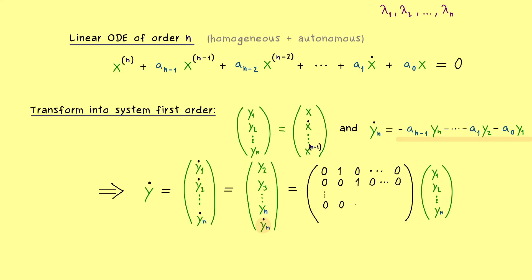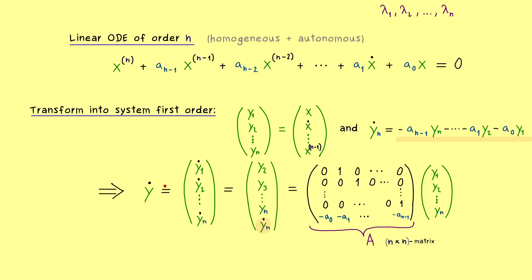Everything is clear until we reach the last row, where we use our ODE equation with coefficients a₀, a₁, and so on. Importantly, −a₀ belongs to y₁, so we start there. Then we continue: −a₁, −a₂, and so on, with the last entry in the matrix being −aₙ₋₁. This is exactly our matrix A. We now simply have y-dot equals A times y.